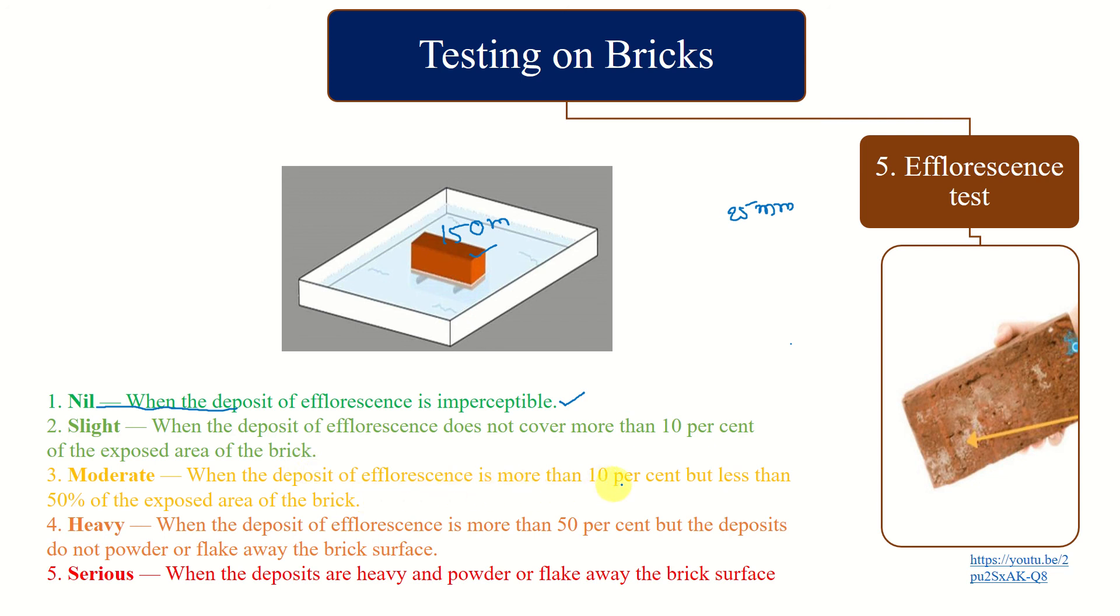Heavy efflorescence is when the deposit is more than 50% but deposits do not powder or flake away from the brick surface. You have a lot more patches and these are not looking like flakes. It will be serious when deposits are heavy and powder or flake away from the brick surface, so it will be flaking away. That is all about efflorescence test.